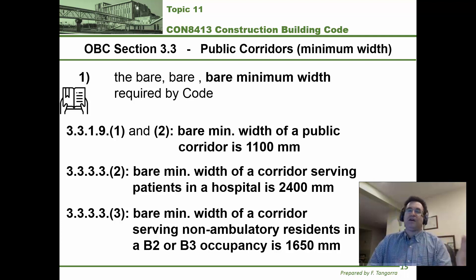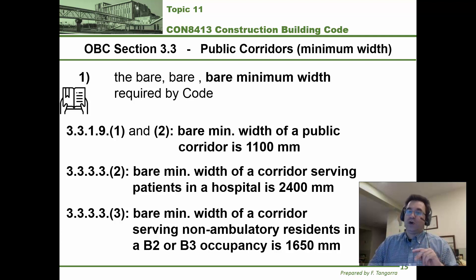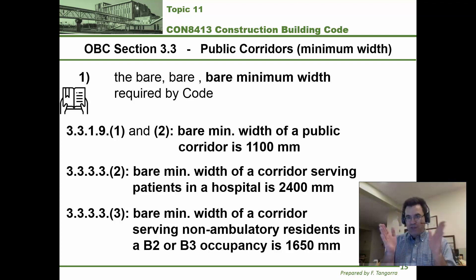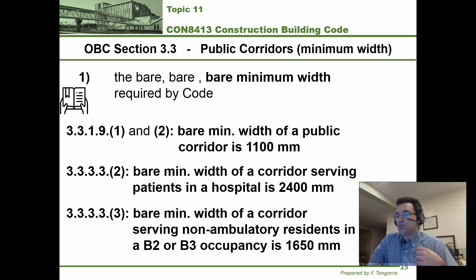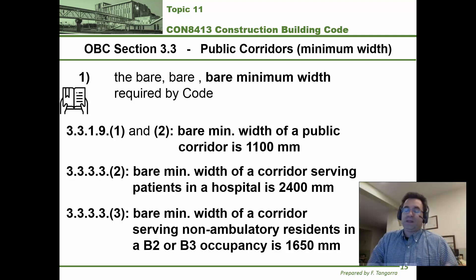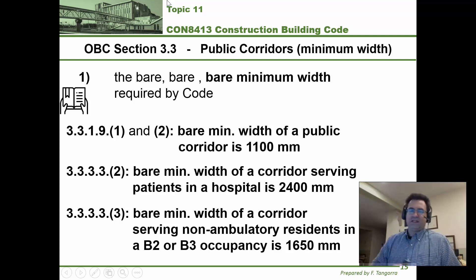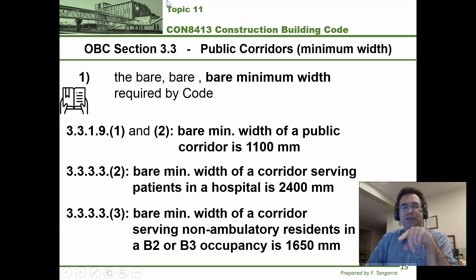Those sentences basically say that with no other guidelines, the minimum is 1,100 millimeters — but always go read it yourself to confirm. The next two items relate to occupancy. If it's for an occupancy serving patients in a hospital, the minimum goes up to 2,400 millimeters, because you may need to move a patient in their bed with equipment alongside. Under sentence 3.3.3.3.3, for occupancy B2 and B3 with non-ambulatory residents, the minimum width is 1,650 millimeters.